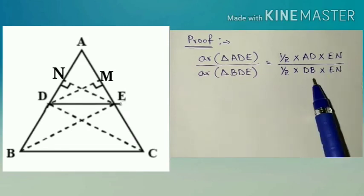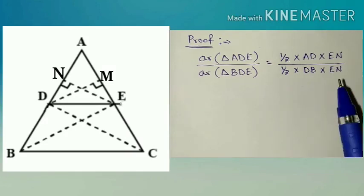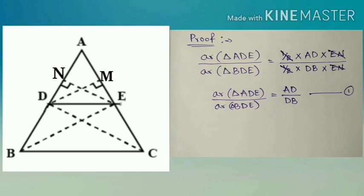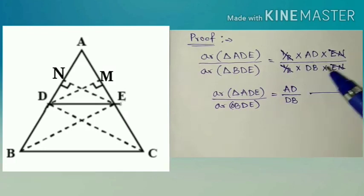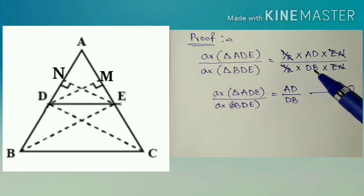Using area of triangle formula: in triangle ADE base is AD and height is EN. Similarly in triangle BDE base is DB and height is EN. By cancelling the same terms EN will get cancelled, after remaining AD by DB. So take it as equation number 1.